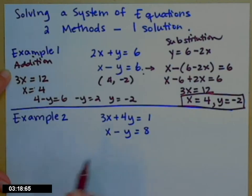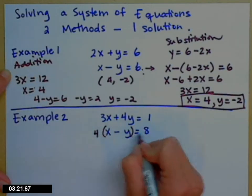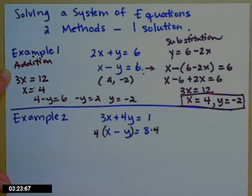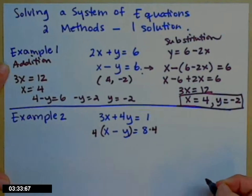But what you can do, what if I multiply that bottom equation, if I multiply both sides by 4? So I can hear you asking, can I just do that? Well, remember, when you have an equation, you can do whatever you want as long as you do it to both sides.